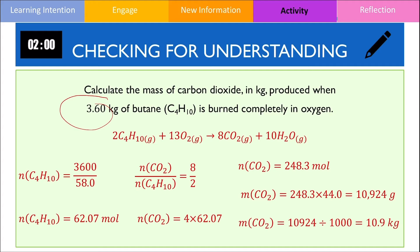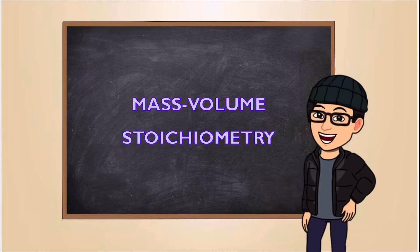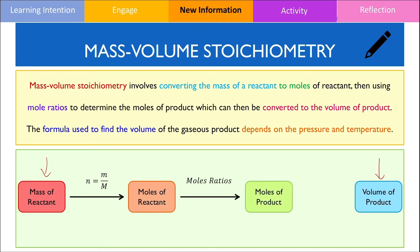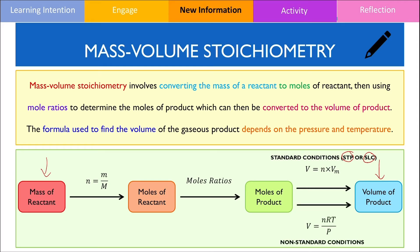In the next section, we're going to look at calculations involving mass-to-volume stoichiometry. As the name suggests, we find the volume of gas produced from the mass of the reactant. We first find the moles using moles equals mass divided by molar mass, then use mole ratios to find moles of product, which are converted to volume. The formula used depends on pressure and temperature: at STP or SLC, we use V equals moles multiplied by molar volume, where Vm equals 22.7 at STP and 24.8 at SLC. Under non-standard conditions, we use V equals nRT over P, derived from the universal gas equation.